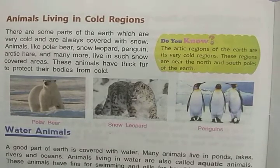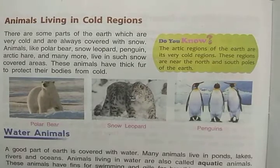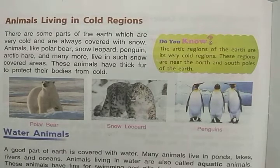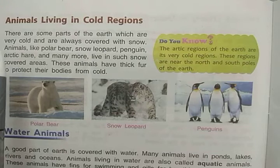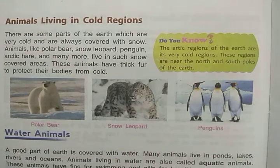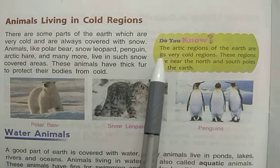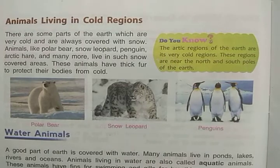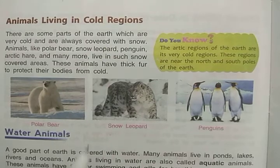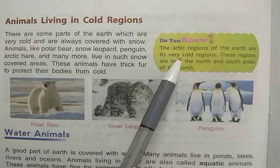Another part of land is the cold region, where there is a lot of snowfall and it is very cold. Animals living in cold regions — there are some parts of Earth which are always covered with snow. These are the polar or arctic regions of the Earth, which are very cold regions. You need to read about these carefully because questions are formed from this topic.